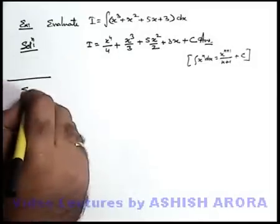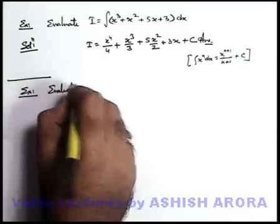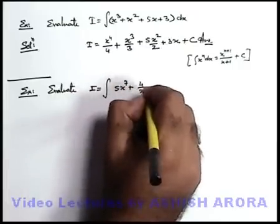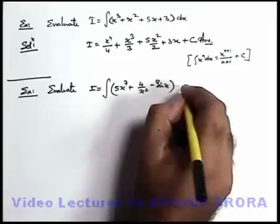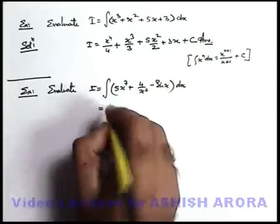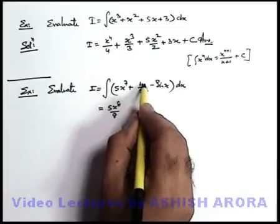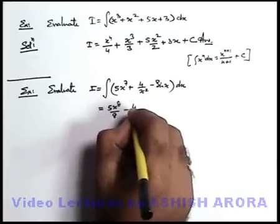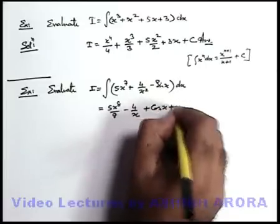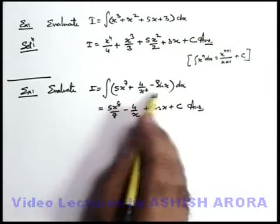Let's take up another example in the same category: evaluate I = ∫(5x⁷ + 4/x² − sin x)dx. Using the same relation x^n: this will be written as 5x⁸/8, and 4/x² is 4x^(−2) which integrates to −4/x, and −sin x integrates to +cos x, plus C, where C is the constant of integration. Here we are just directly using the formulas of direct integration.